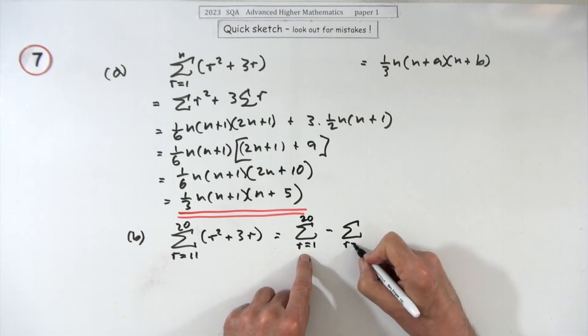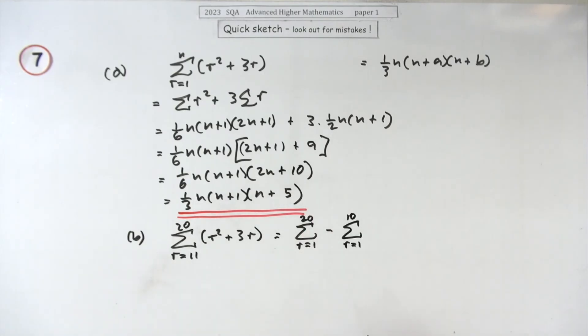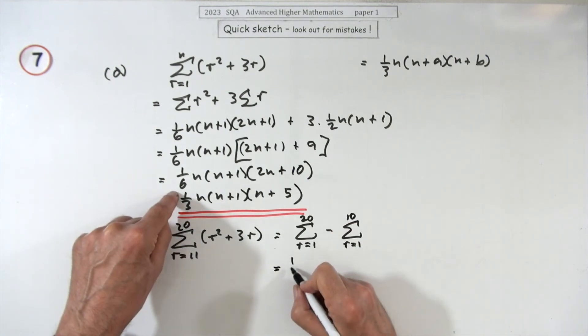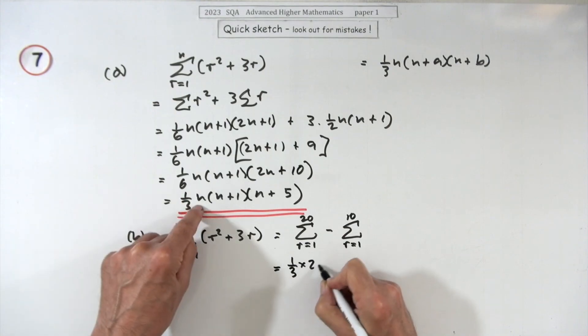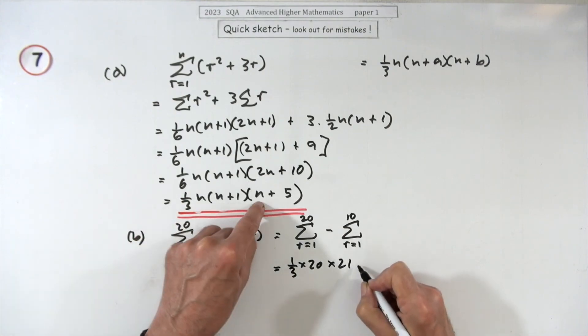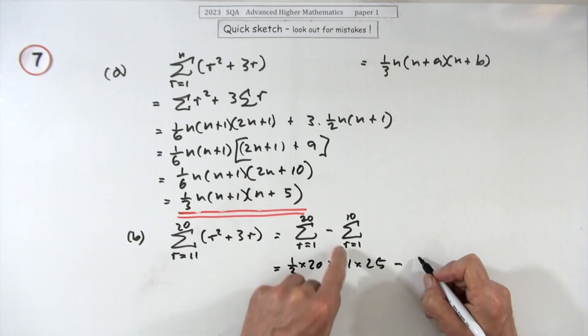So just using this formula first of all with a 20, so you've got a third of 20 times 21 times 25, take away this one, a third of this time it's 10, 10 times 11 times 15.